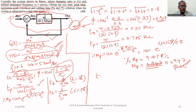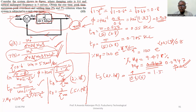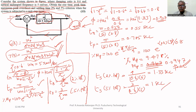Settling time for 2% tolerance equals 4 / (ζωn) = 4 / (0.6 × 5) = 1.33 seconds. Settling time for 5% tolerance equals 3 / (ζωn) = 3 / (0.6 × 5) = 1 second. For further details, refer to the book mentioned in the description.